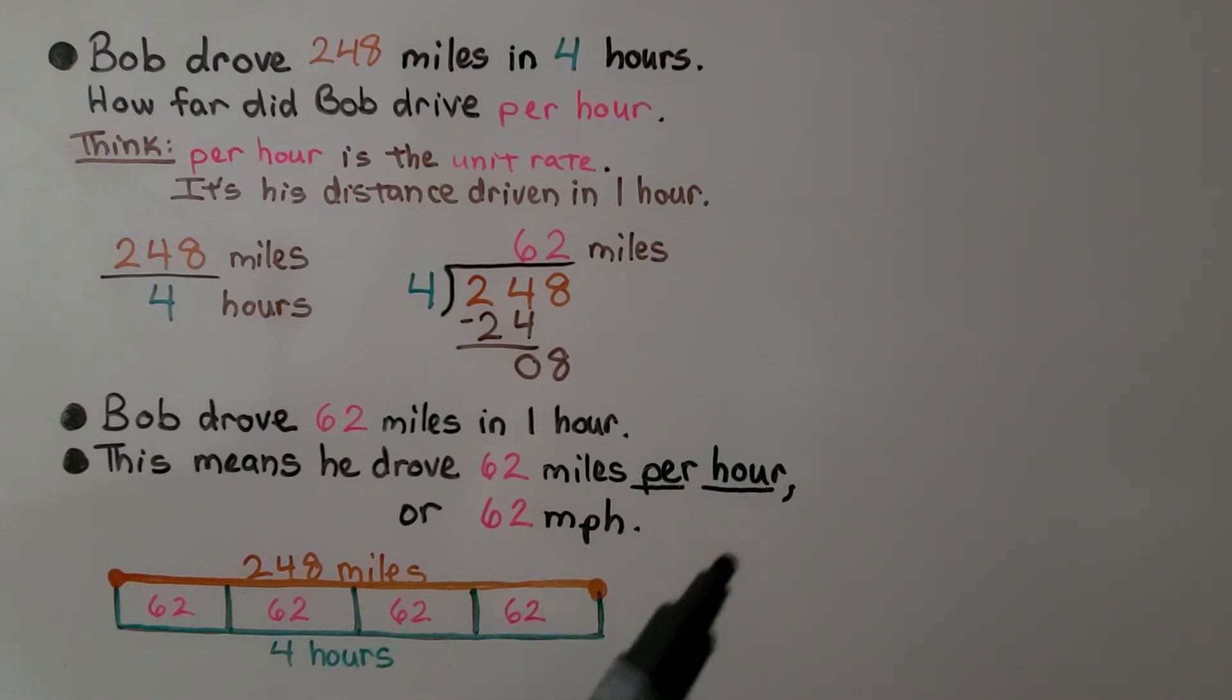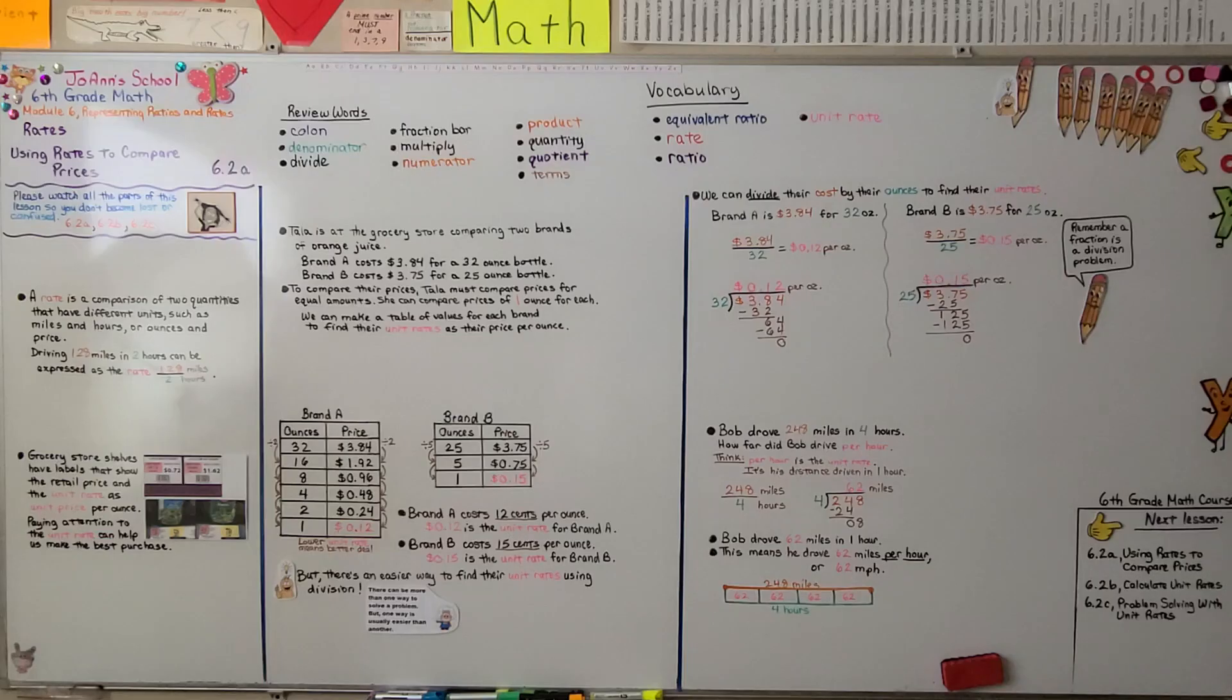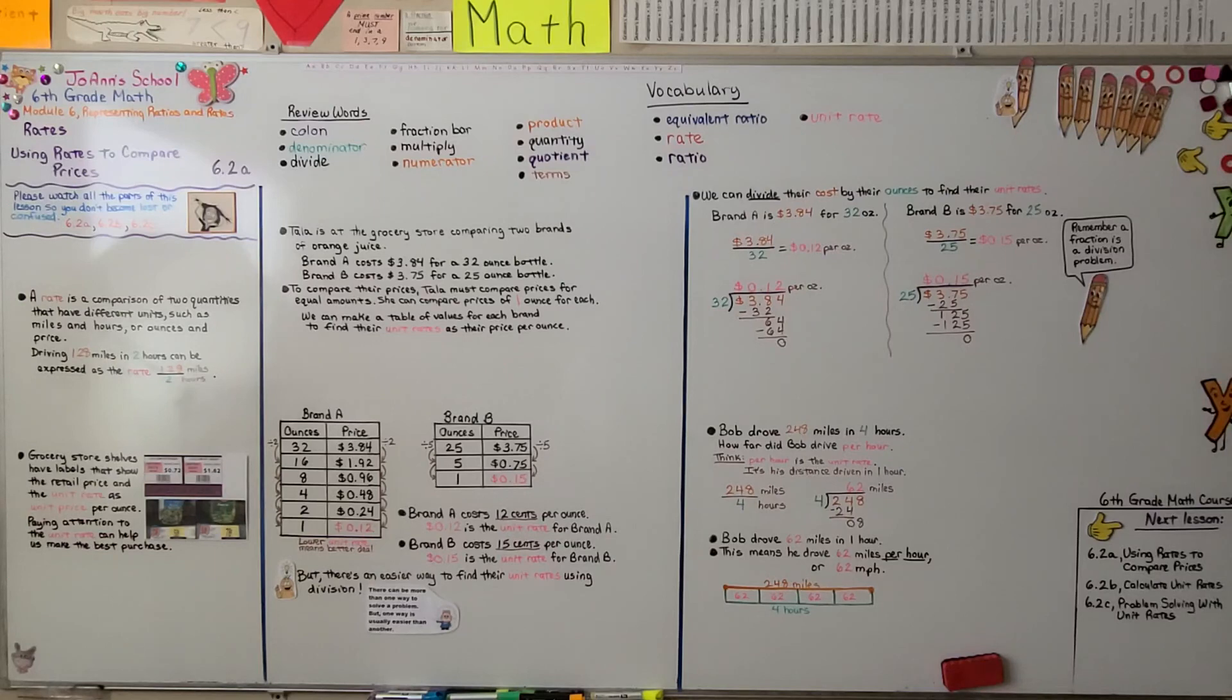This means he drove 62 miles per hour, because remember, that means each hour. So that also means he drove 62 MPH for miles per hour. We have 248 miles split into four equal parts of hours. It would be 62 for each hour, per hour. I hope this lesson made sense to you and I hope you have a really nice day. I'll see you next time. Bye.